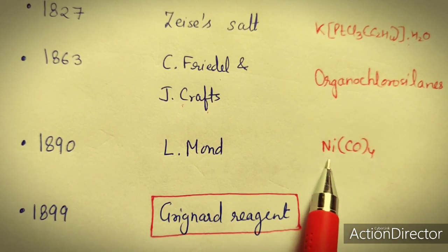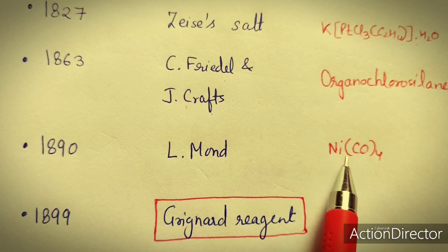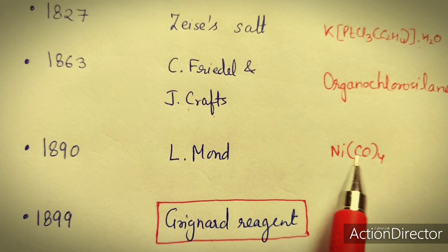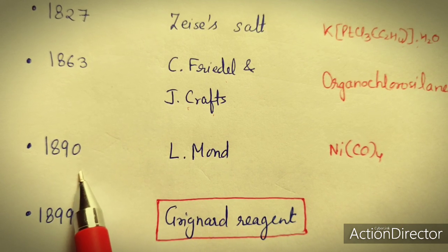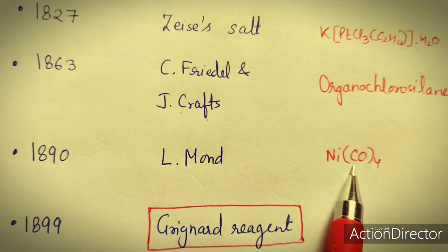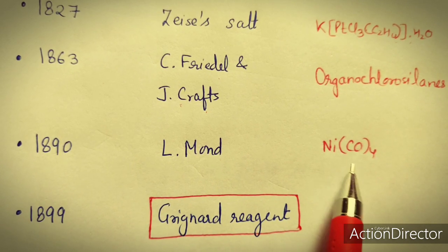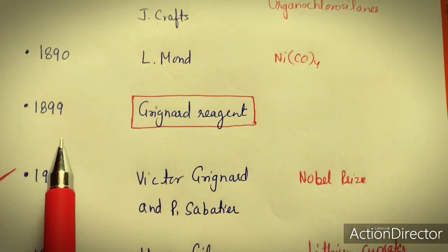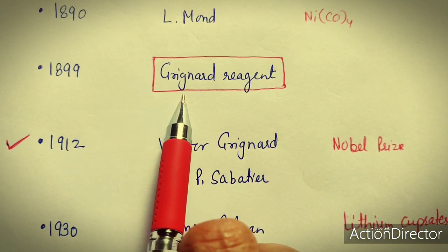Then in 1890, Mond discovered nickel tetracarbonyl — the first metal carbonyl compound. This is an important organometallic compound and is part of the metal carbonyls family.